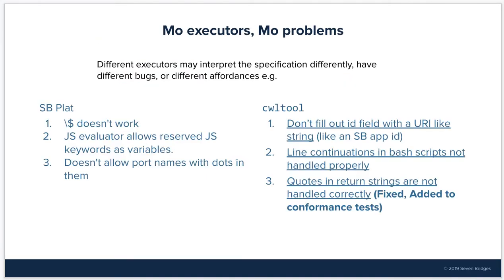In reality, when you have multiple executors, you do run into problems. Different executors may interpret the specification differently. They may have different bugs, or they may have different affordances. Here are a list of six things that I found that differed between the Seven Bridges platform executor and CWL tool while I was doing some work where I had to run CWL documents on both Seven Bridges platform as well as CWL tool.